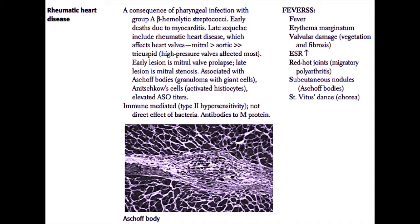Besides making antibodies against streptolysin O, we also develop antibodies to the M protein of the bacteria, which is thought to cause the rheumatic heart disease. The mnemonic to remember for rheumatic heart disease is FEVERS: Fever, Erythema marginatum, Valvular damage, Elevated ESR, Red-hot joints, Subcutaneous nodules, and St. Vitus's dance — also known as chorea.